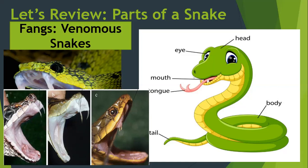We only see fangs in venomous snakes. Venomous snakes. Venom — V-E-N-O-M — is the poison that comes from a snake. That is why sometimes we say that a venomous snake can also be a deadly snake, because if they bite you, the venom or the poison will pass through the fangs or these teeth. And then the venom can make you sick or it can kill you.